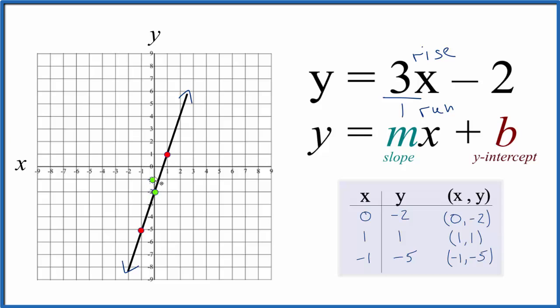We can go to our y-intercept, we can rise 3: 1, 2, 3, and go over 1; 1, 2, 3, and over 1, and so on. Likewise, we could go down 3: 1, 2, 3, and over 1; down 3: 1, 2, 3, and over 1. So this confirms that we did this correctly and we have the correct graph for y equals 3x minus 2.